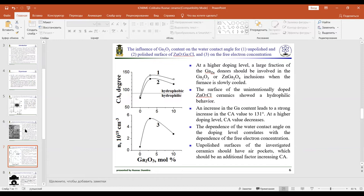At a higher doping level, a large fraction of the gallium donors should be involved in the gallium oxide or zinc gallium oxide inclusions when the furnace is slowly cooled, and the value decreases.